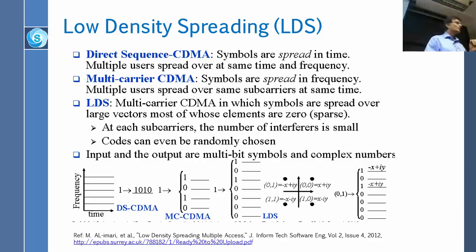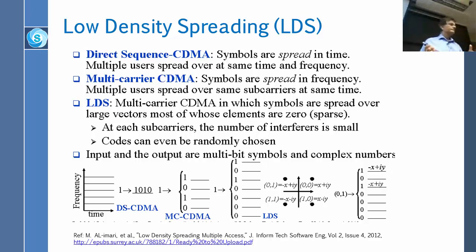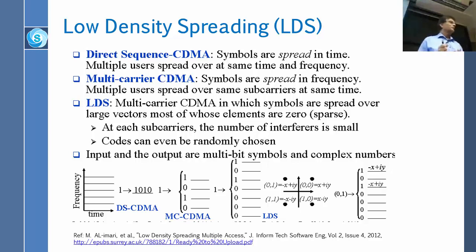That is LDS — Low Density Spreading — and the code can even be randomly chosen. The input and output are multi-bit symbols. The example I gave was a simplification because the input is not one bit; the input is generally a complex number, and the output is even more complex.